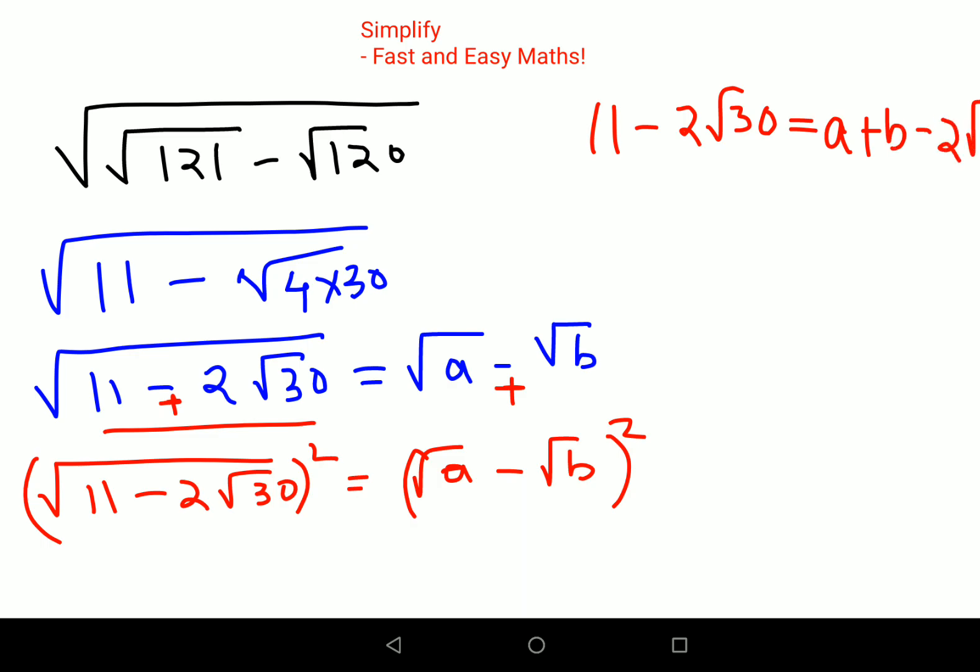So I can say that 11 = a + b, and -2√30 = -2√ab. We can cancel the -2 on both sides, and squaring, we get 30 = ab.